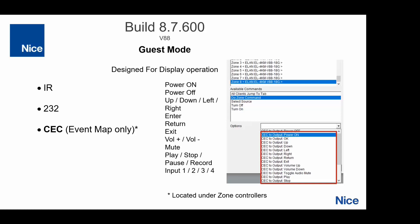We also added CEC control. This was asked for a couple of years ago. Some people don't like CEC, and that's fine — it's just an option. We added it as event map only, located under the zone controls, and you can see all the commands we've added for CEC. If you use CEC and the display is compatible, there's no emitter, no 232 codes, no extra cables needed at all. CEC can be a little unpredictable with certain displays and firmwares, so use it at your own risk.